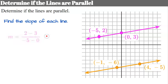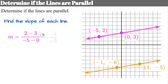Let's check by finding the slope of the pink line. We calculate the change in y — 2 subtract 3 — over the change in x — negative 5 subtract 0. That gives us negative 1 over negative 5, which simplifies to positive 1 fifth. So the slope of the pink line is 1 fifth.